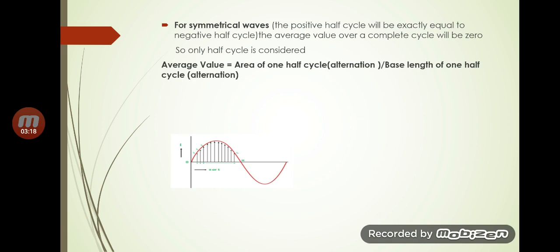The average value equals the area of one half cycle divided by the base length of one half cycle. This one half cycle is also known as an alternation. So it is the area of one half cycle or alternation divided by the base length of one half cycle or alternation.